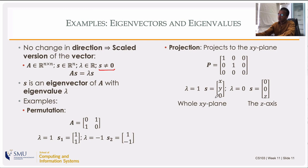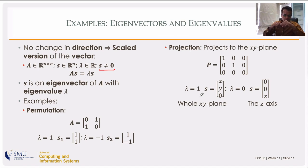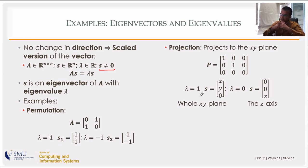For eigenvalue λ=1, any vector in the XY plane is an eigenvector. The best choice would be basis vectors [1,0,0] and [0,1,0] — those are orthogonal, and the whole XY plane is a space spanned by two eigenvectors. We call that an eigenspace.